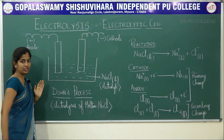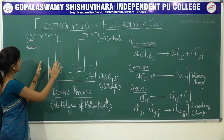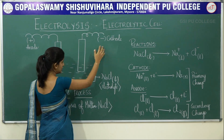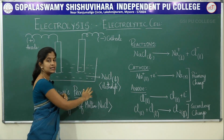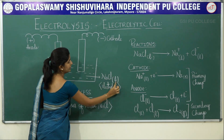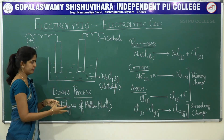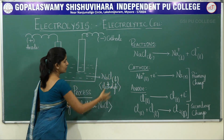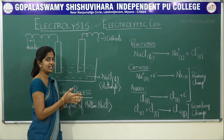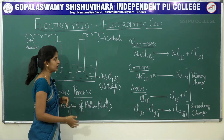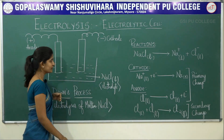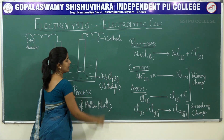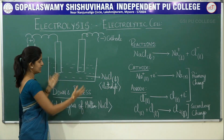You can see an anode and a cathode in this cell. The anode is positively charged and the cathode is negatively charged, both dipped into the electrolyte — sodium chloride in its molten (liquid) form. Sodium chloride acts as the electrolyte and gets electrolyzed, splitting into Na⁺ and Cl⁻ ions.